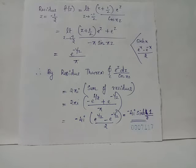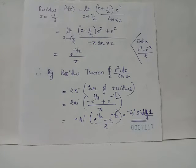By the residue theorem, the integral over C of f(z) dz equals 2πi times the sum of residues, that is 2πi times (−e^(1/2) + e^(−1/2)) / π.